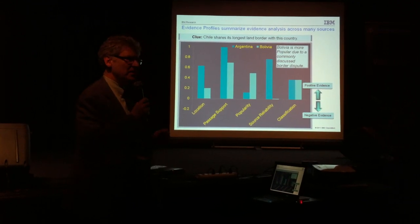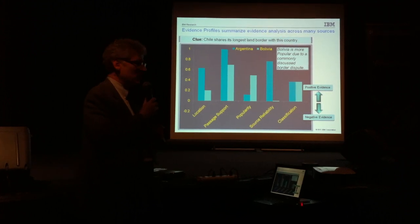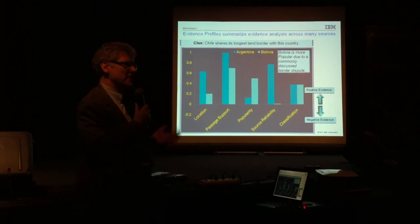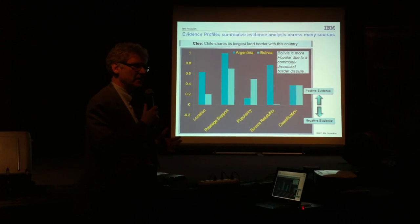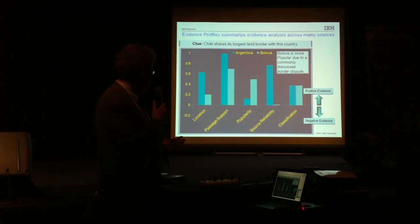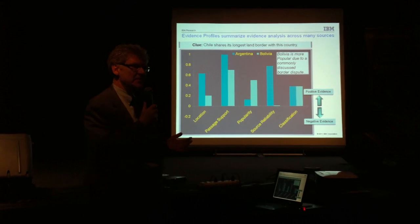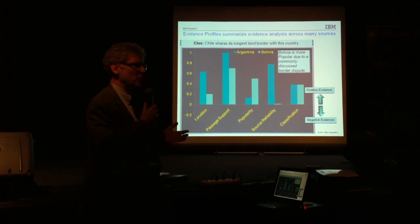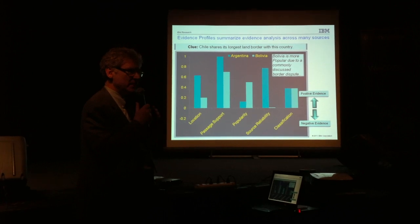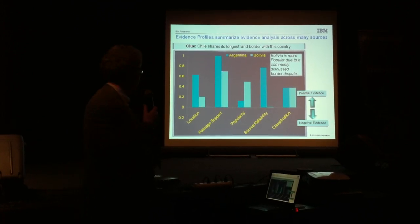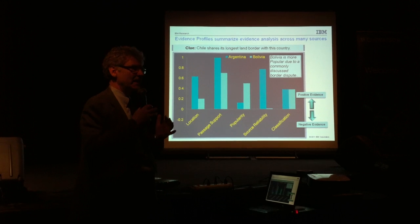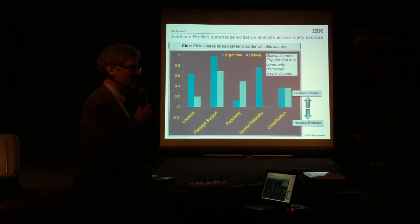Here's an illustration of how features play out. The question is: 'Chile shares its longest land border with this country.' The answer is Argentina, but Bolivia was a strong contender. Some features favored Bolivia, some favored Argentina — there happened to be a border dispute between the countries, which meant a lot was written about the land border between them. Argentina did win, but Bolivia was very close behind. It really all depends on how the different components of evidence stack up and what the totality of evidence is for each candidate.